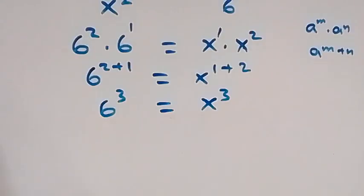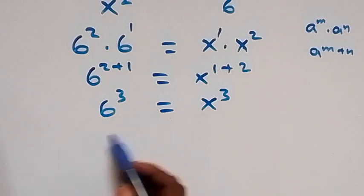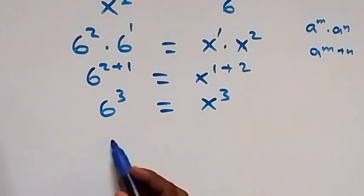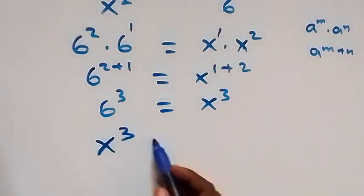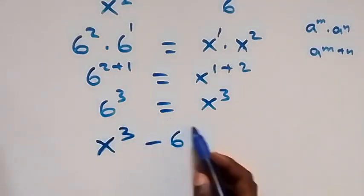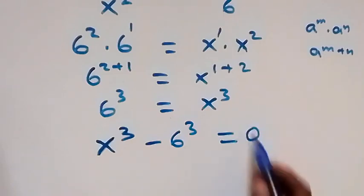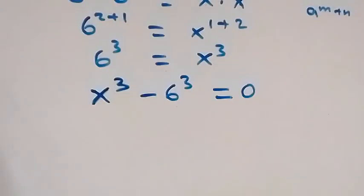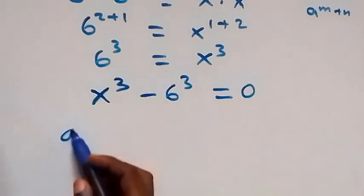We can take everything to one side. Rearranging gives us x³ minus 6³ equals 0.